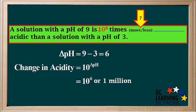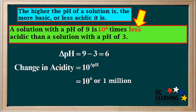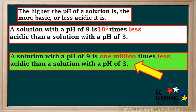Now we must determine whether the solution of pH 9 is more acidic or less acidic than a solution of pH 3. Recall that the higher the pH of a solution, the less acidic it is. So as pH increases, a solution gets less acidic. We can say that the solution with a pH of 9 is less acidic than the solution with a pH of 3. So the answer is: a solution with a pH of 9 is ten to the sixth times, or one million times, less acidic than a solution with a pH of 3.